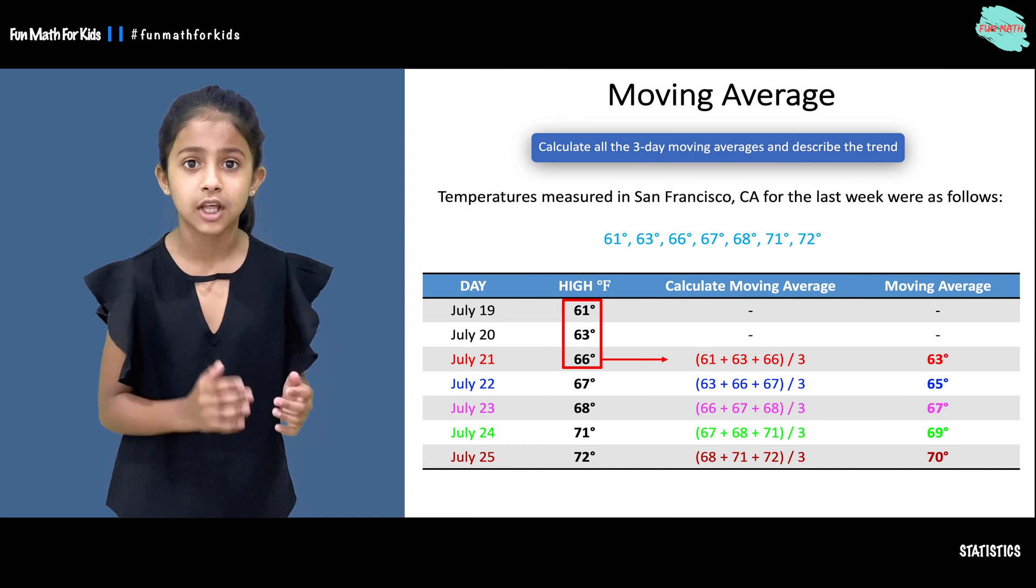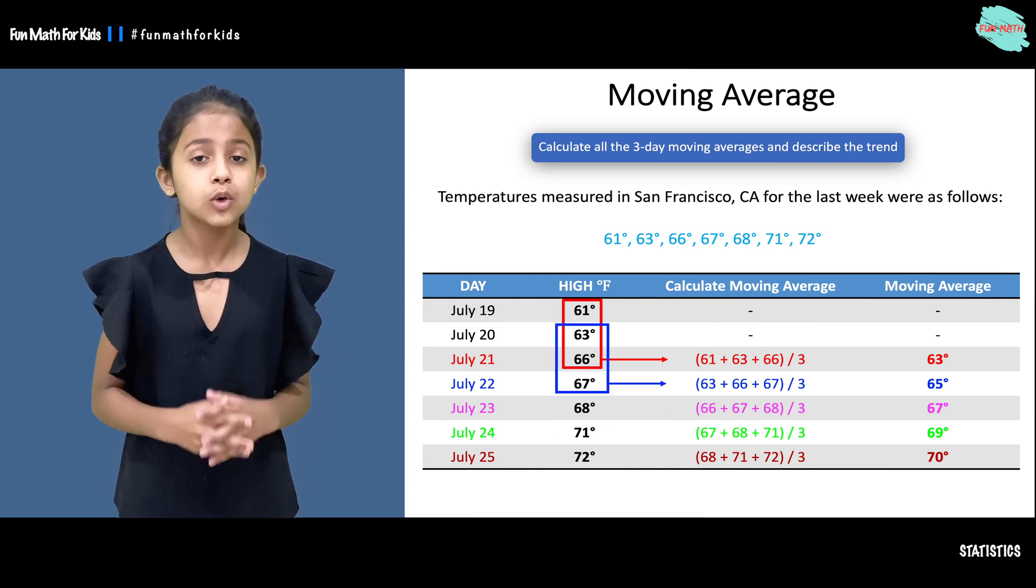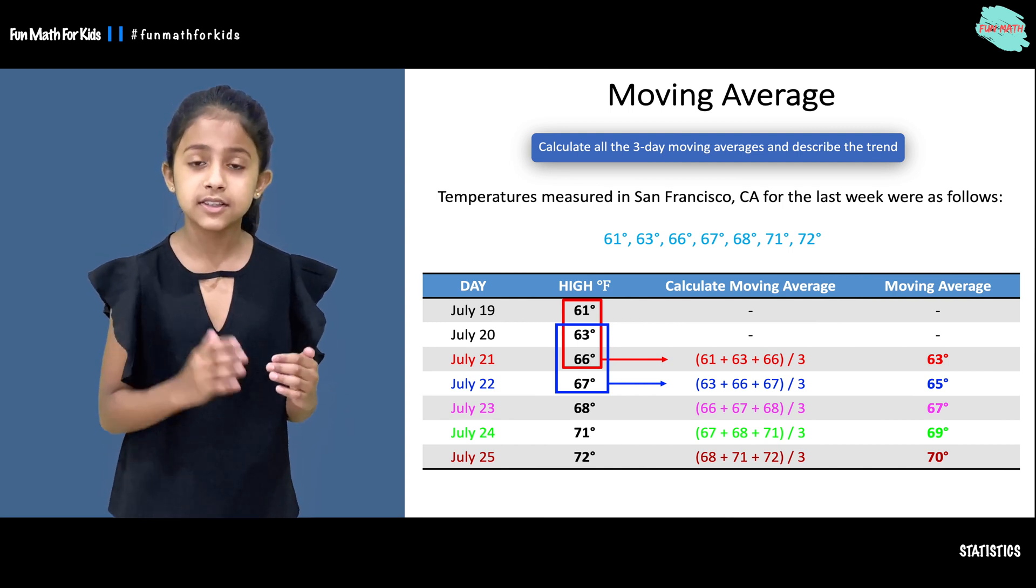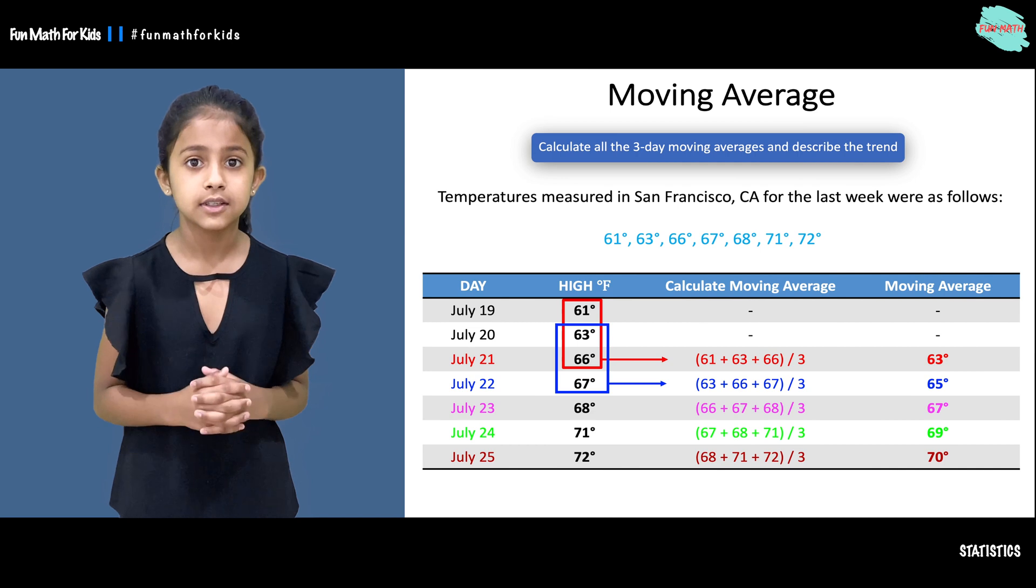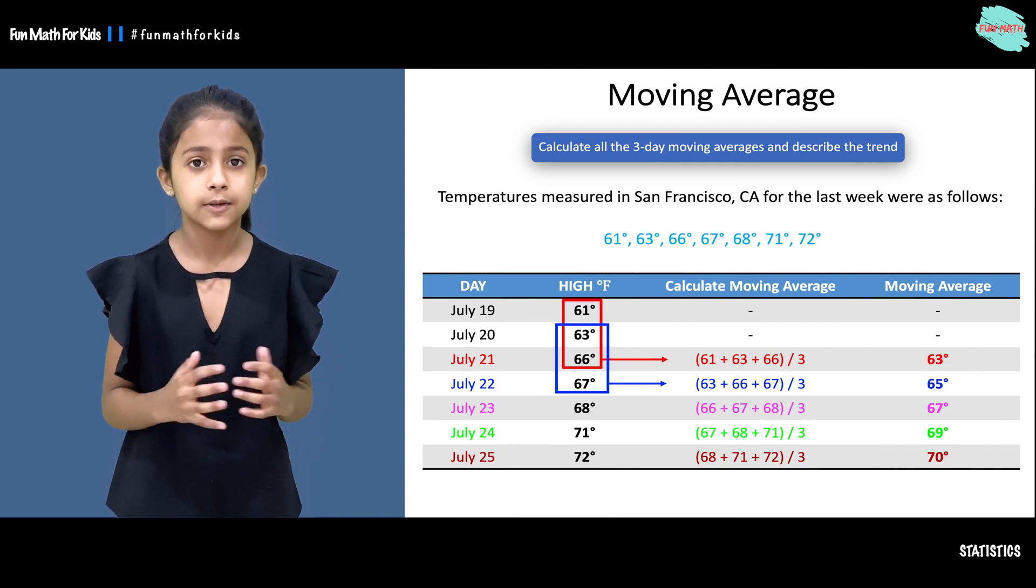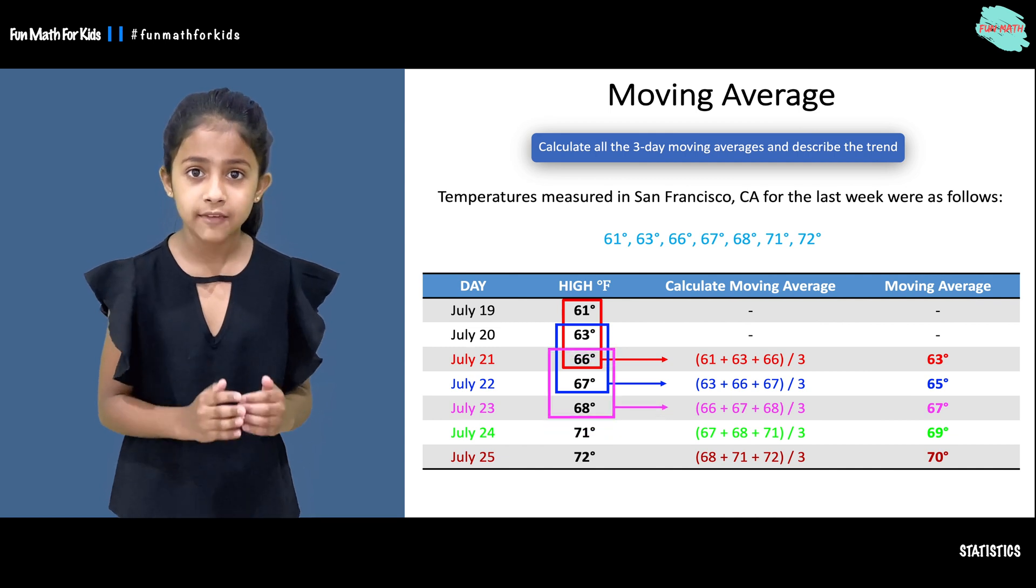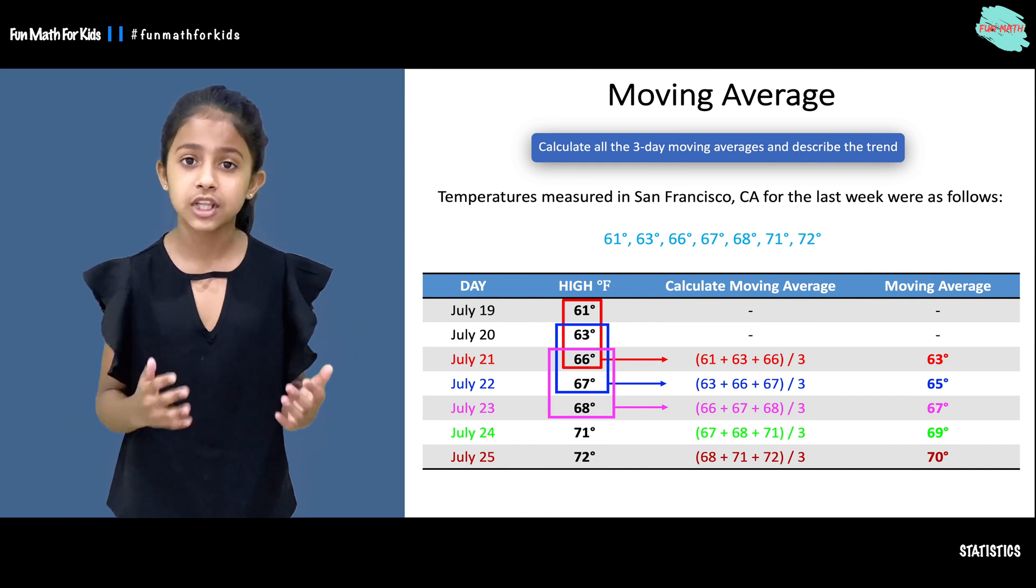Now let's move on to July 22nd. We will find the average of the three previous days, which will give us 65 as our moving average for July 22nd. Now let's move on to July 23rd. We will find the average of the three previous days, which will give us 67 as our moving average for July 23rd.